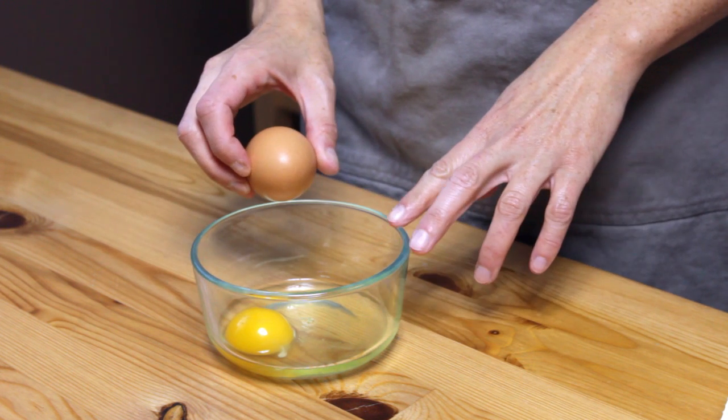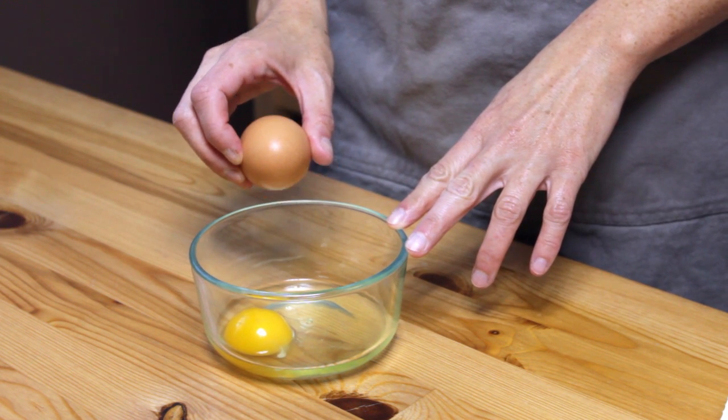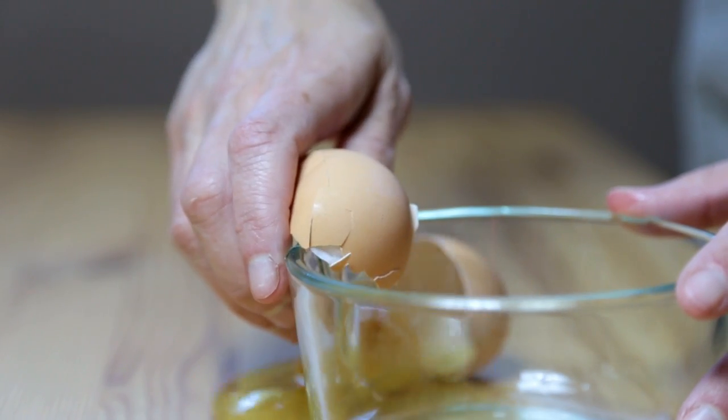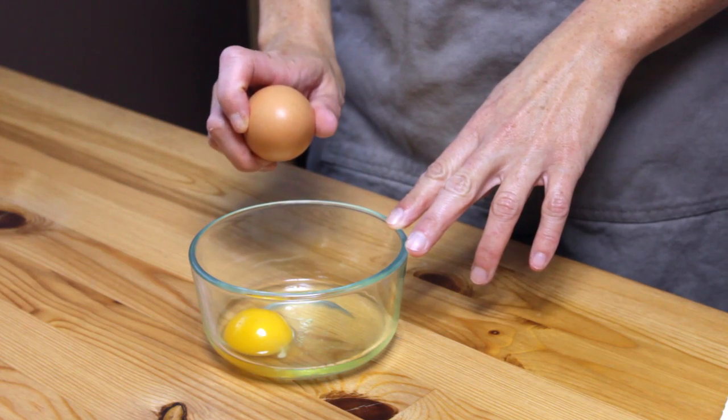It's actually very simple to crack an egg. You simply rap the egg on the edge of a bowl, but you don't want to rap it too hard, otherwise that happens. Kind of hard, but not too hard.